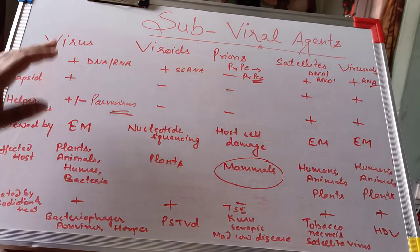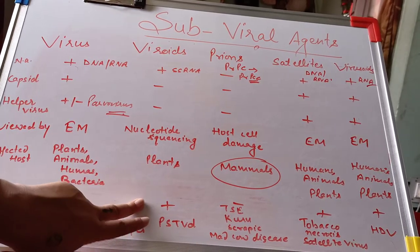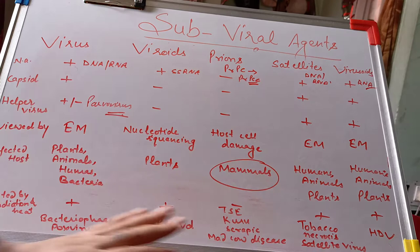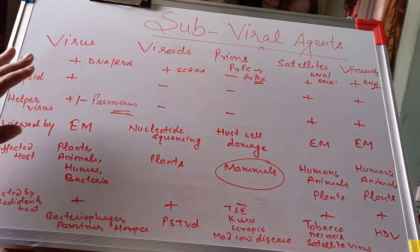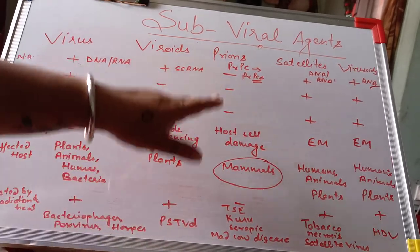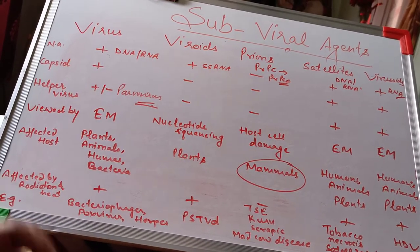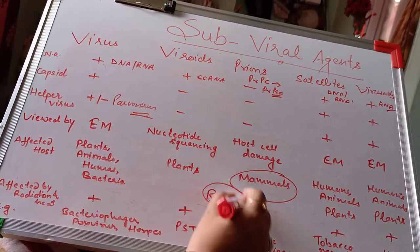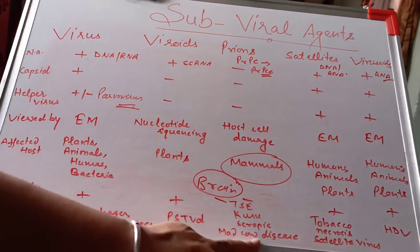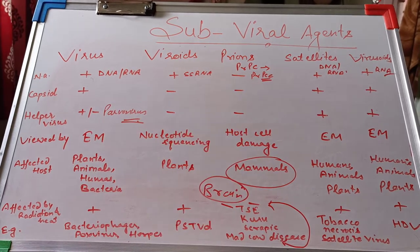Regarding resistance to radiation and heat: viruses are relatively easily killed by radiation and heat, but prions are active even at high heat and high light conditions. Prions cause diseases such as TSE — Transmissible Spongiform Encephalopathy — which is a brain infection affecting humans and animals. Other prion diseases include Kuru, which also affects the brain, Scrapie in sheep, and Mad Cow Disease. These proteins mainly affect the brain in humans and animals.